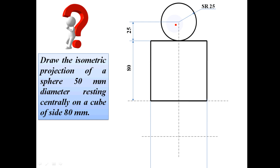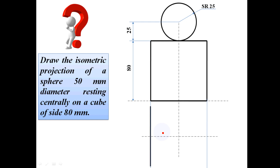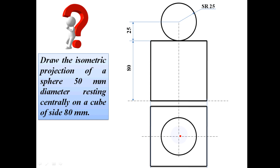We are using a horizontal axis as the base. This is the front view and top view. The cube is square in the top view. The axis line is on this side. The top view shows the square with side 80mm. This is the orthographic projection.